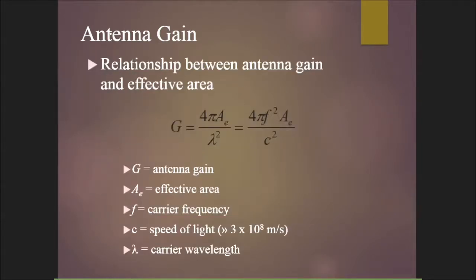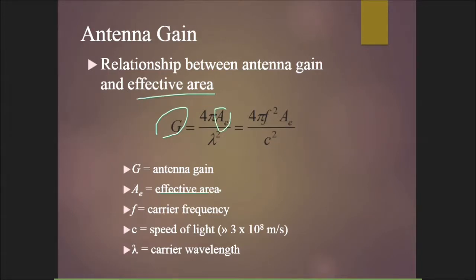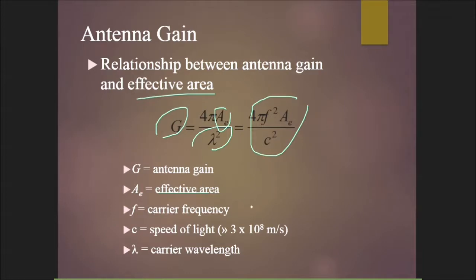The relationship between antenna gain and effective area is: G = 4π·Ae / λ², where Ae is the effective area and λ is the wavelength. Since c = fλ, we can substitute to get G = 4π·f²·Ae / c², where the speed of light c = 3 × 10⁸ meters per second.